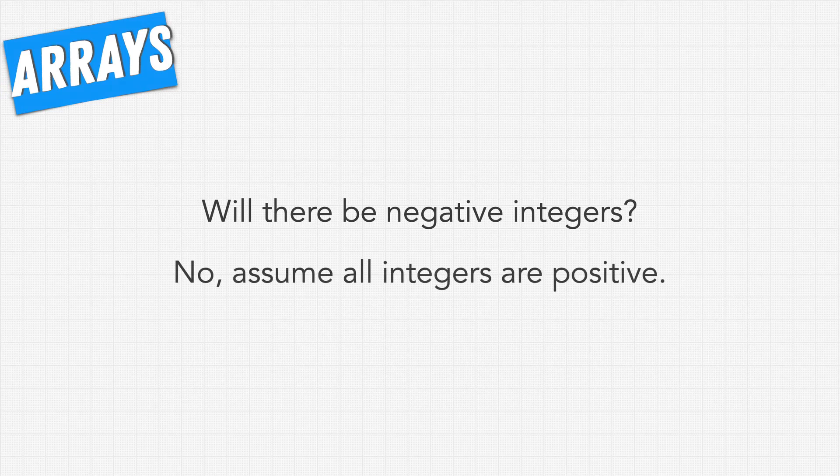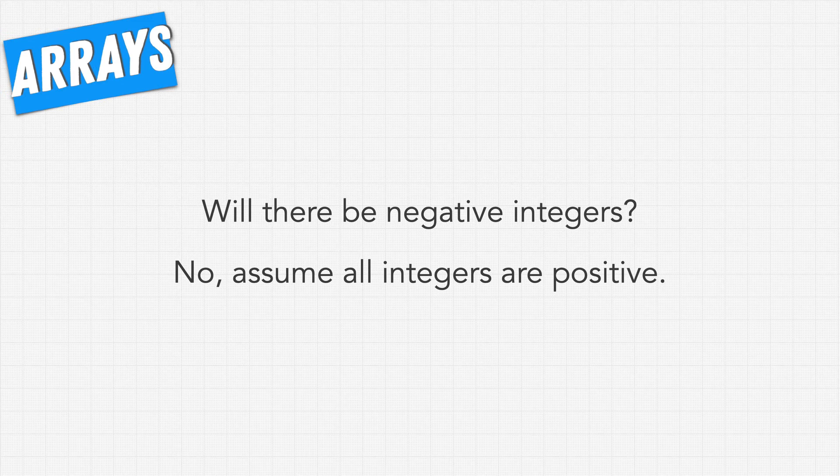The next question we can ask is: will there be negative integers? And here we can say no, assume all integers are positive. And that's actually all of the constraints that we need in order to figure out this question. It's actually a pretty straightforward question because we have a visual idea of what we're looking for and there's not much here that could really affect how we might think about edge cases. So let's move on to the next step which is where we write out some test cases.